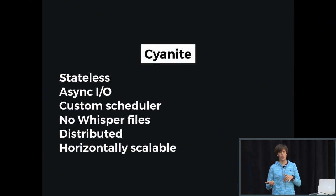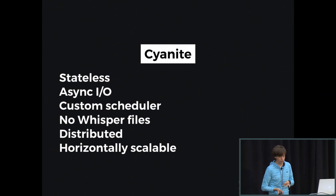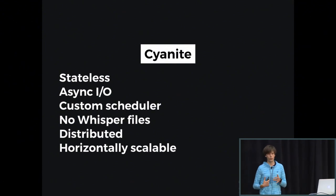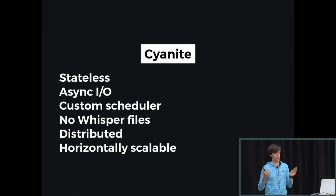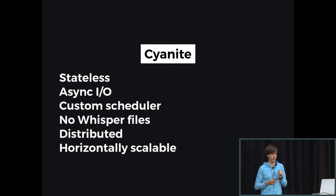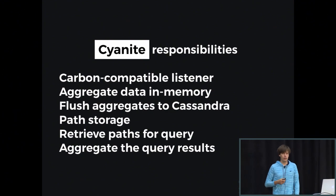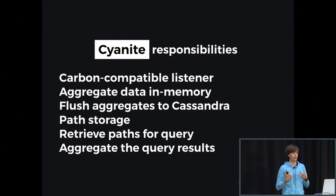In the early days, Cyanide had problems that didn't allow us to make the server completely stateless. Today it's completely stateless. We use asynchronous I/O on top of Netty. We have a custom scheduler to ensure every task scheduled on Cyanide gets optimal CPU time. We have no Whisper files because we use Cassandra, which is distributed and horizontally scalable. Cyanide takes over the responsibilities of all parts of Graphite I mentioned.